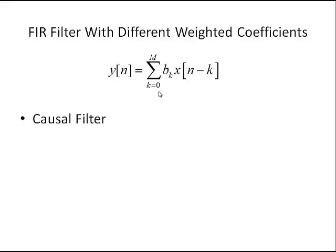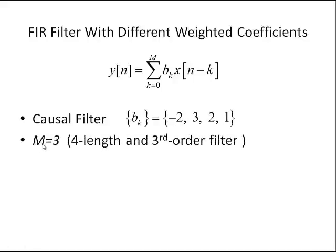We're going to start off with a causal filter, where k is equal to 0. Here's our set of filter coefficients, going from negative 2 for k equals 0, all the way to k equals 3, with a filter coefficient of 1. For this example, we have m equal to 3, which defines a length of m plus 1, or 4. This is also a third-order filter — m equal to 3 describes the order of the filter, because a third-order filter means you have the present value plus three past values of the input stored.